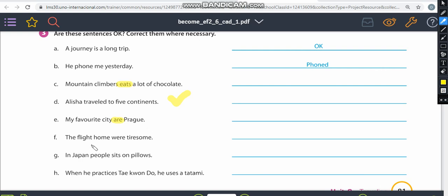The flight home were tiresome. The flight home, singular, were plural. So we're going to replace were to was. In Japan, people sit on pillows. People is the plural form of person. So I cannot use sits. I have to use sit because the subject is in the plural form.